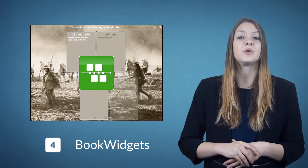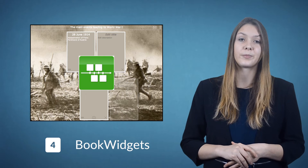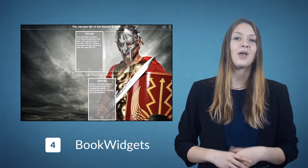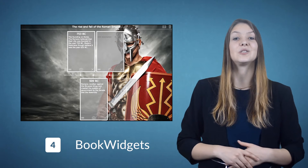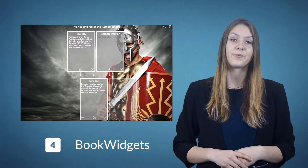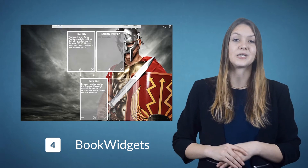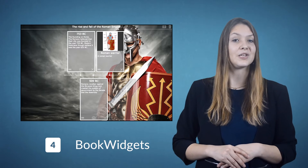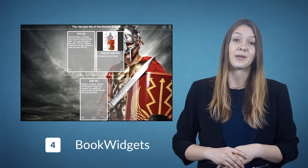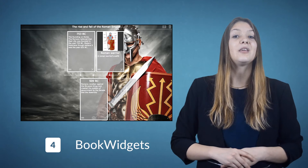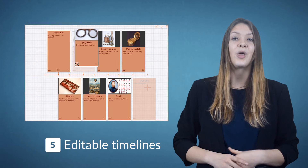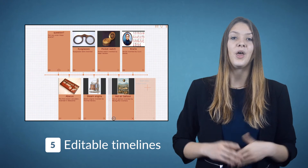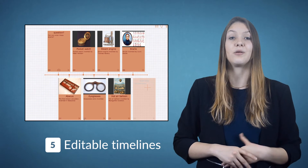The editable mode allows students to add events to the timeline and change the order. I believe that editable timelines are very useful in the classroom. The teacher can start by adding a couple of events and students can complete the timeline. The results are available in the BookWidgets dashboard. In this example, two events are already added by the teacher and the student gets the task to complete the timeline — they can even add pictures to events. Another approach is having a timeline with events in the wrong order, so students have the task to rearrange them in the right order.